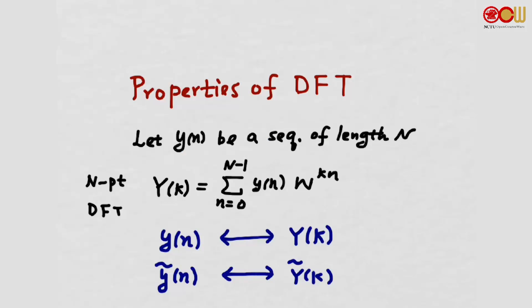Now let's talk about the properties of DFT. Suppose Y[n] is a sequence of length N, and its N-point DFT is as we have defined earlier — Y[K] is computed this way. From the sequence Y[n] we can compute the N-point DFT, and from the DFT we can also compute Y[n] back. Correspondingly, we can apply periodic extension on Y[n] to get Y-tilde[n], and the DFS coefficient of Y-tilde[n] is Y-tilde[K].